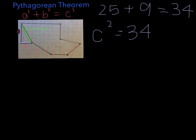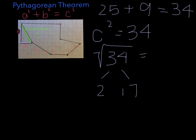Now we want to find the square root of 34, so that equals c. 34 divided into prime numbers is 2 times 17, and those both happen to be prime numbers, so c equals the square root of 34.